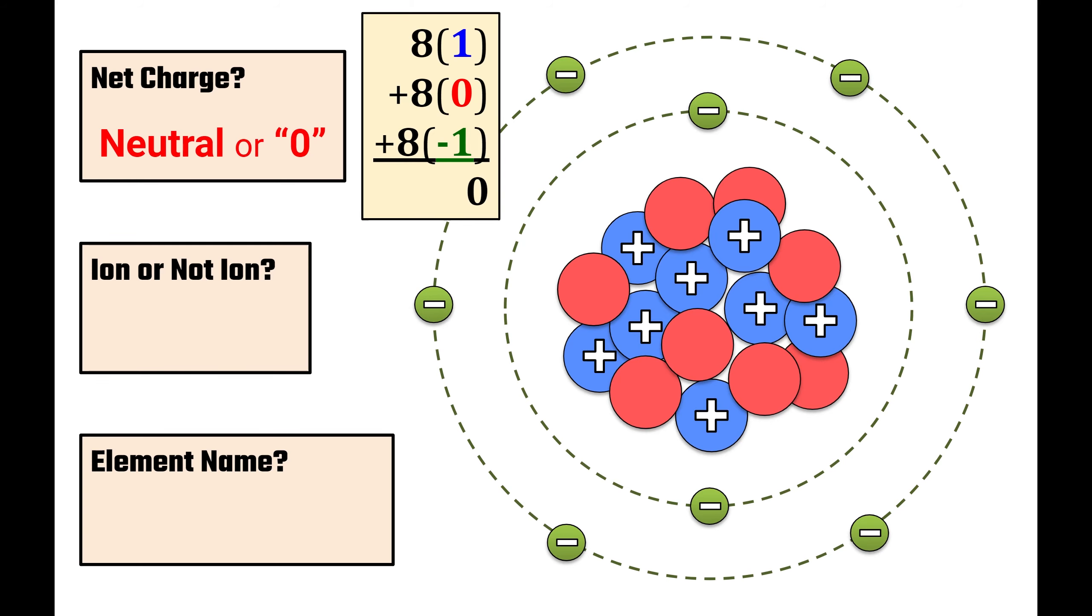So is this an ion or is it not an ion? Well, remember an ion is an atom that has charge. So if the charge is zero, then this is clearly not an ion. And finally, what is the element name that we're looking at? Is it hydrogen? Is it helium? Is it beryllium? Well, no, it's actually oxygen. And if you didn't get that answer, don't be too hard on yourself because it was kind of a trick question. You couldn't really get it unless you know your chemistry.